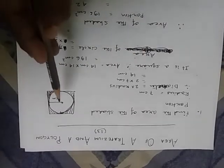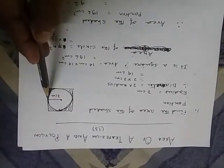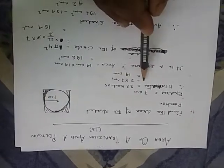So if this is the radius of a circle that is 7 cm, then the diameter is 2 into radius. So the diameter is 14.